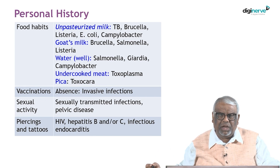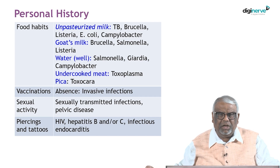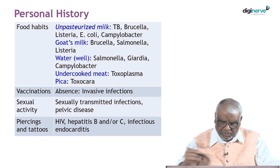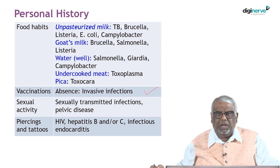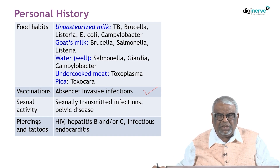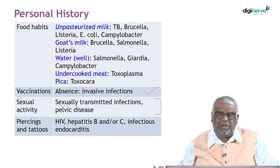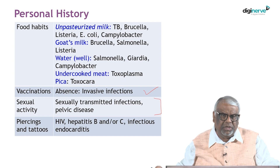Goat's milk consumption is typically associated with Brucella and Salmonella infection. Well water is associated with Salmonella and Giardia, and undercooked meat with Toxoplasma and Toxocara. Absence of vaccination makes invasive infections more common. In adolescents engaging in sexual activity, always think of STDs and pelvic diseases. History of piercing and tattoos again raises concern for HIV, Hepatitis B or C, or infectious endocarditis.